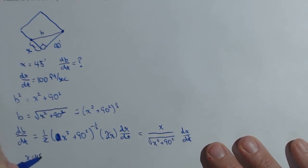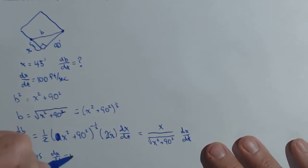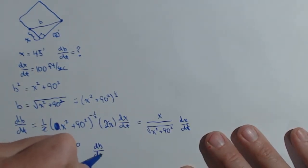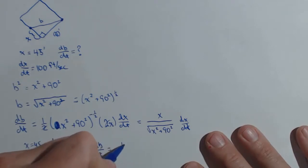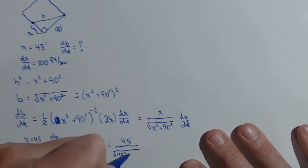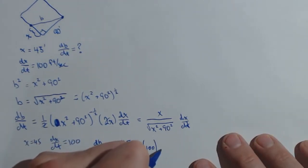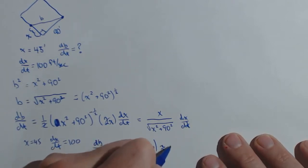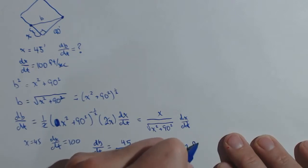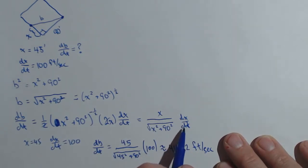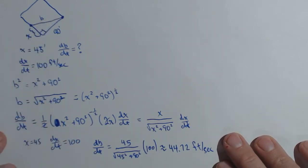For our example, when x equals 45 and dx/dt equals 100, we solve for db/dt by plugging in values: db/dt = 45 over the square root of 45² + 90², times 100, which is approximately 44.72 feet per second. The units are feet per second because x is measured in feet and time in seconds.